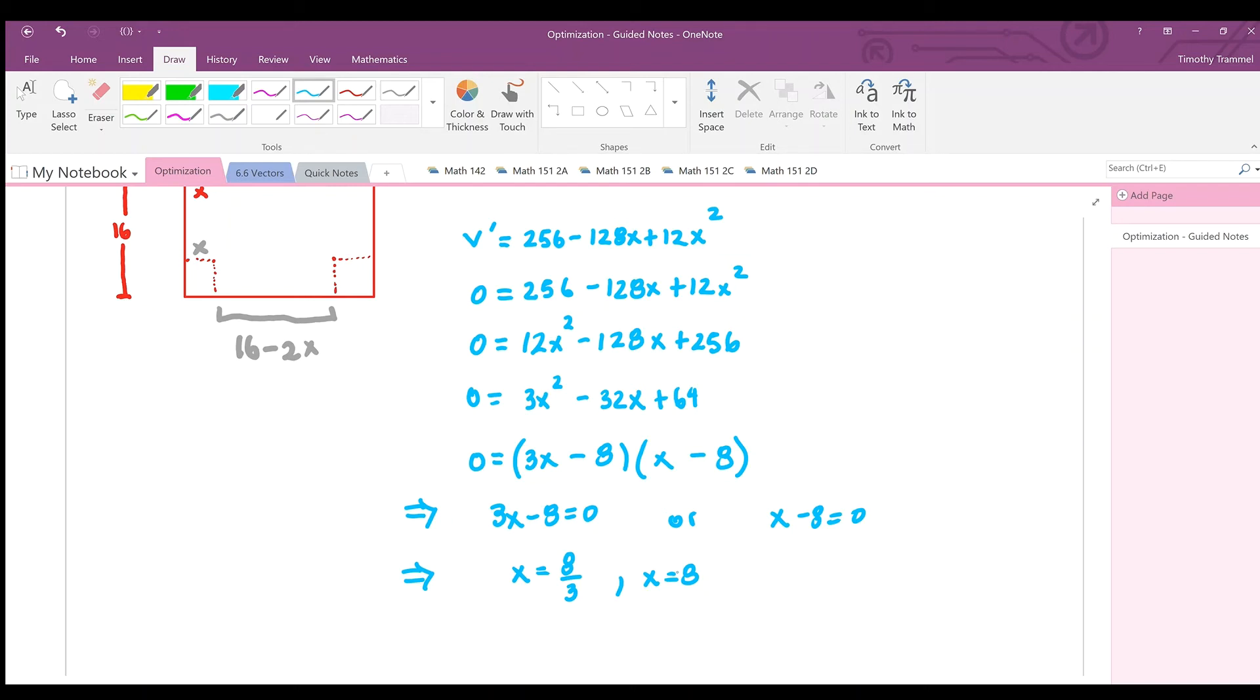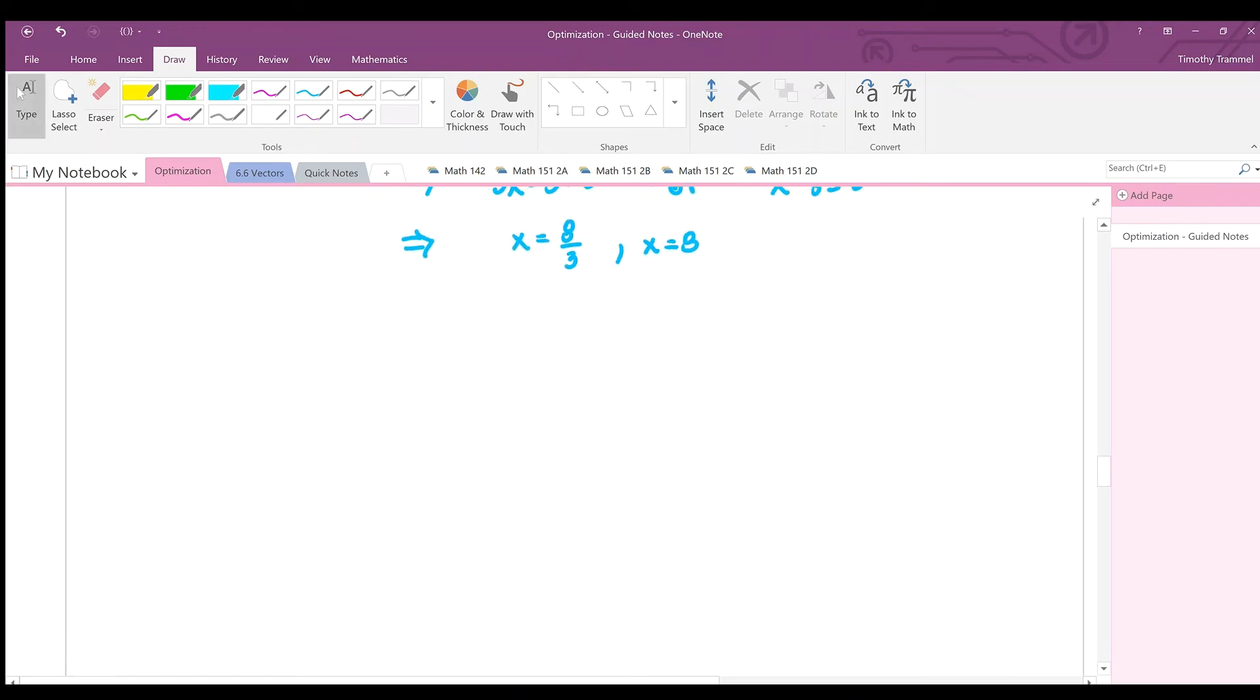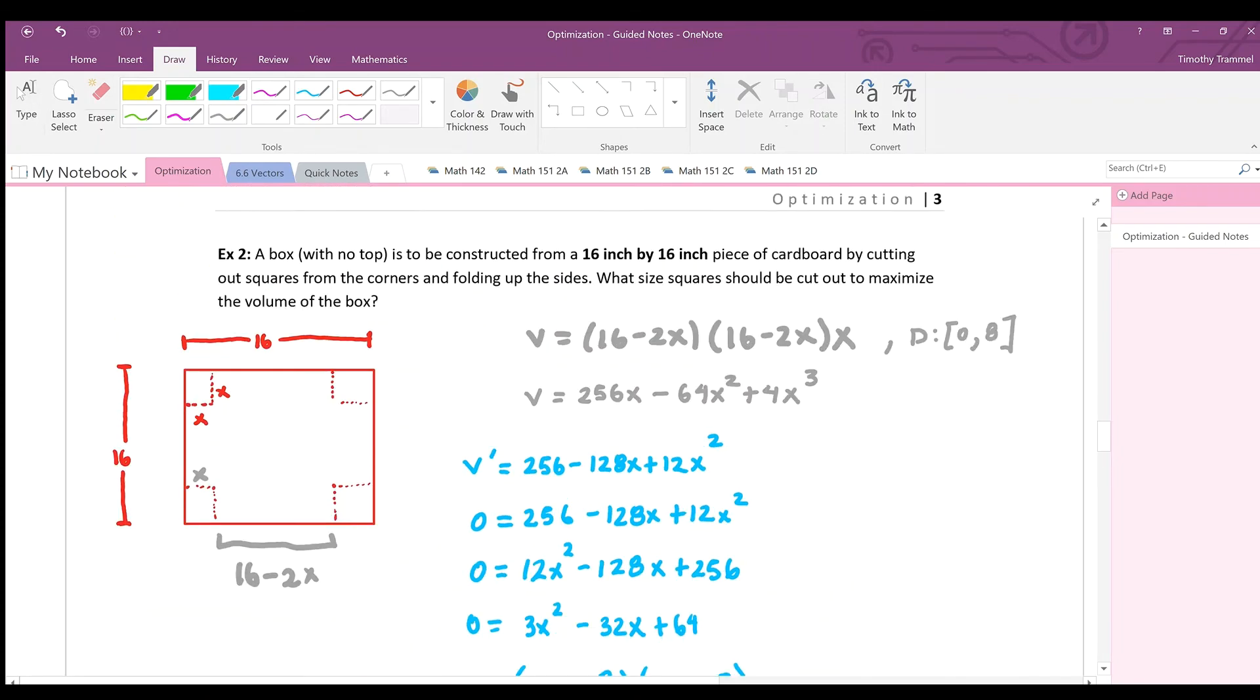Don't forget, we also want to check the end points. So we will check the value of the volume when x equals 0 and when x equals 8. So let's use that closed interval test. So the first thing we want to check is the end points. So if you try to find v of 0, what's that going to be?